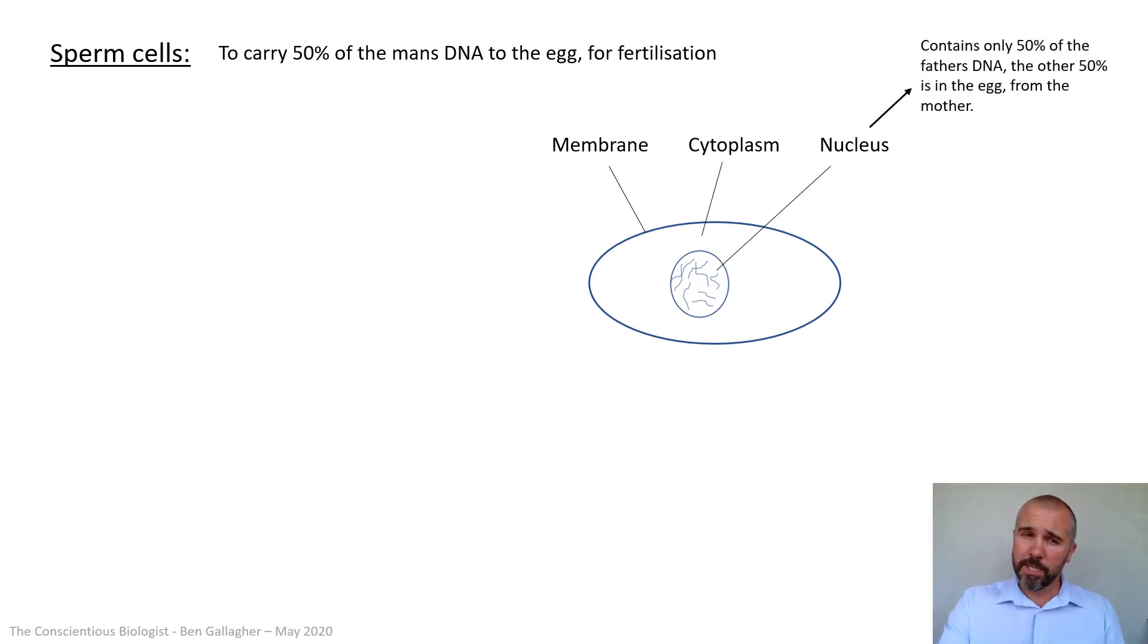The nucleus though, specialist bit of sperm cells, it contains only 50% of the father's DNA. The other 50% from the egg, from the mother, we've already mentioned that. But sperm cells have this middle section here. We'll come back to why in a second, because they also have this long tail section.